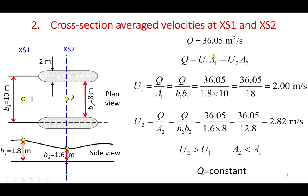Because the product of velocity and cross-section area is constant, when velocity changes the cross-section area also changes. The cross-section area at point 1 is 18 m² and at cross-section 2 is 12.8 m². That concludes the solution, and I hope you find this video useful.